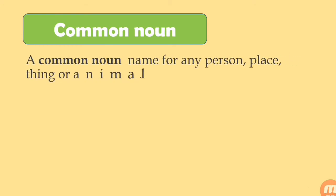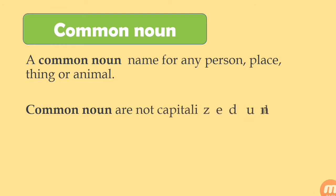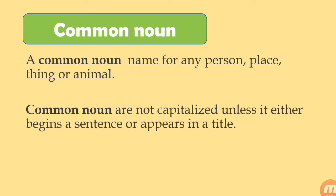A common noun is a name for any person, place, thing, or animal. We use regular words for common things — for example: 'That person went to market,' 'That place I have seen already,' 'I bought these things for my child,' or 'That animal we saw yesterday at the zoo.' This is the kind of sentence we use in regular life, so these are common words — that's why they are called common nouns. Common nouns are not capitalized unless the word begins a sentence or appears in a title.